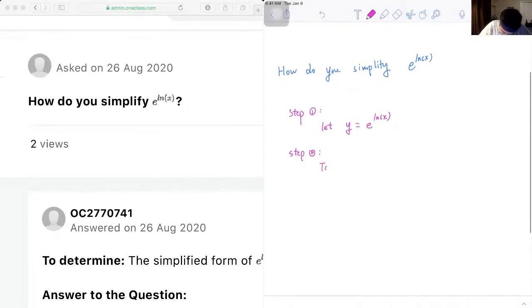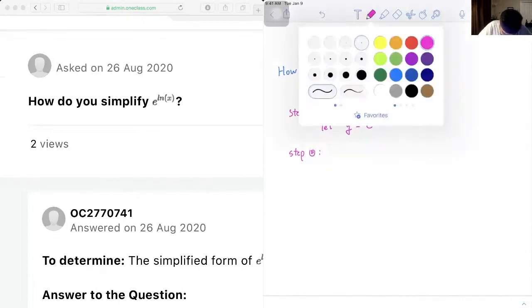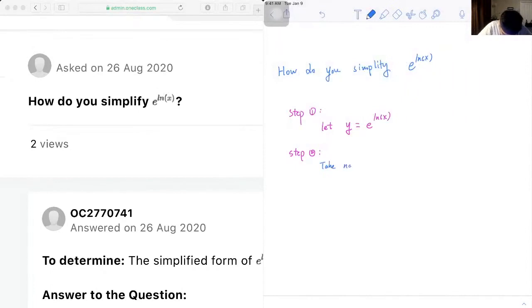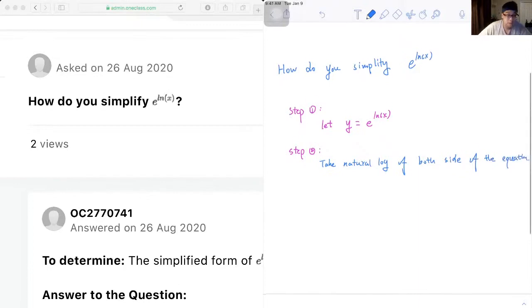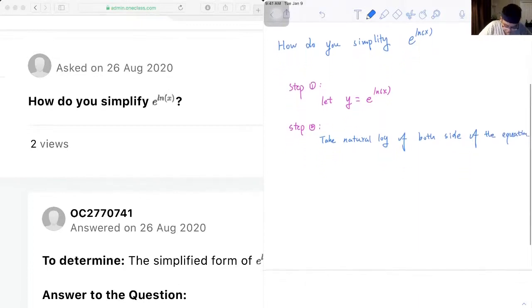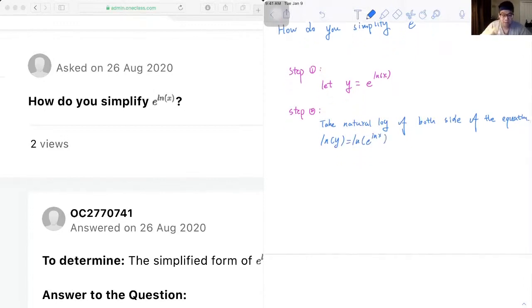We will take the natural logarithm of both sides of the equation. So we will have log y is equal to log e to the exponent of log x. We pretty much just added ln on both left-hand side and right-hand side.